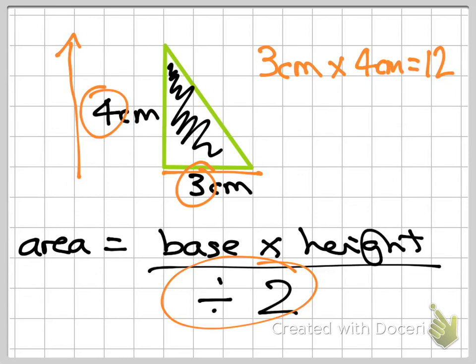Then, don't forget to divide it by 2. So 12 divided by 2 equals 6 centimetres squared.